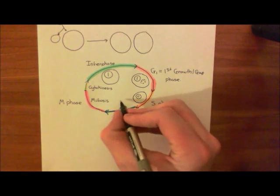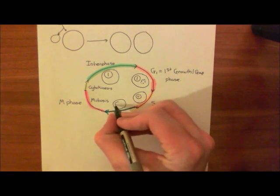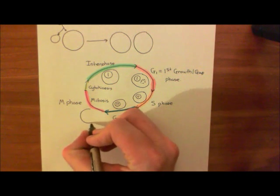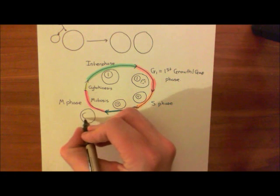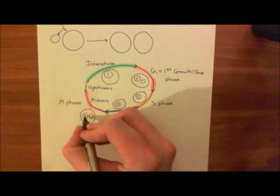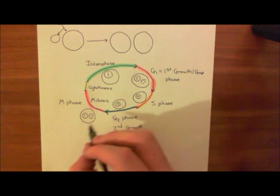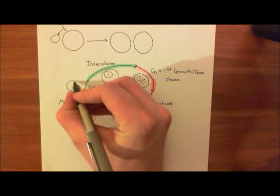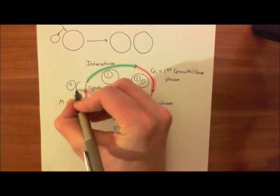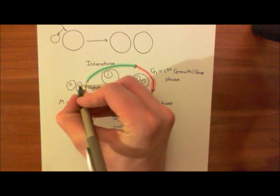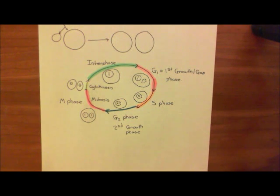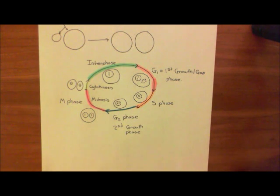In mitosis, what's going to happen is you're going to make two nuclei now, each with the normal DNA content, but this cell now has two nuclei. Then, in cytokinesis, you're going to split it apart into two separate cells, each with a nucleus with the normal amount of genetic material in. That's a sort of summary of the cell cycle, a brief beginner's guide to the cell cycle.